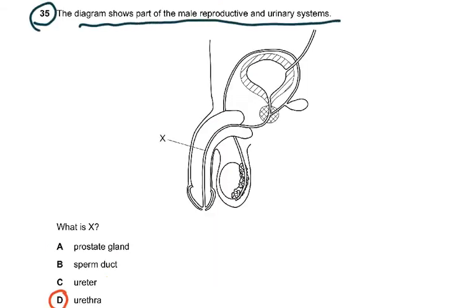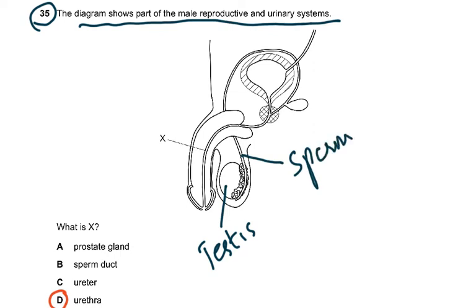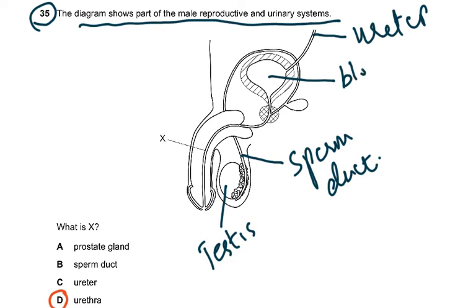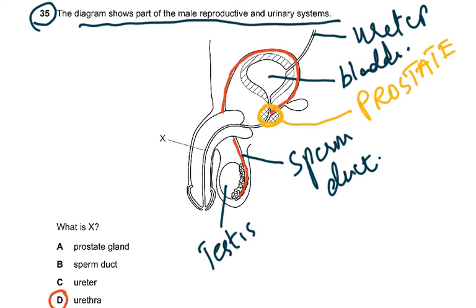Question 35: the diagram shows part of the male reproductive and urinary system. X is the urethra. The testes produce sperm; the sperm duct (vas deferens) curls around and joins the urethra. The ureter connects to the bladder. The organ surrounding the urethra at that junction is the prostate gland. When the prostate gland enlarges it presses on the urethra, causing difficulty in urinating — this has also appeared in Paper 2 questions.